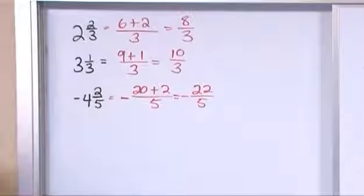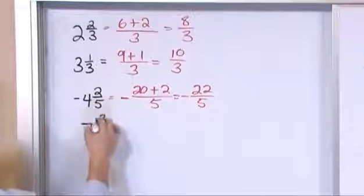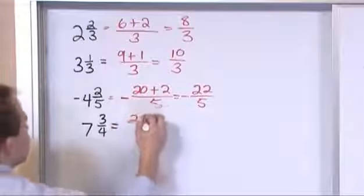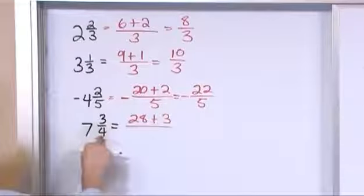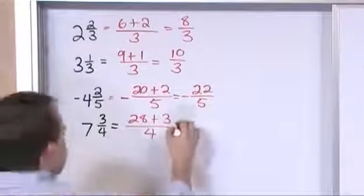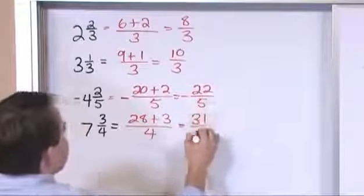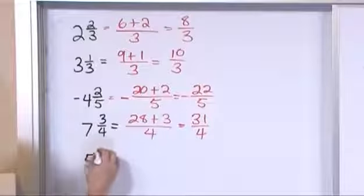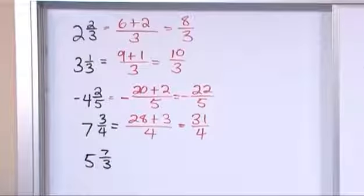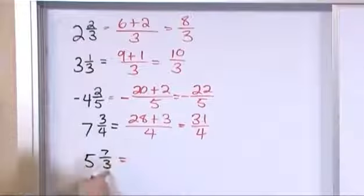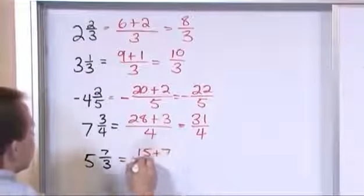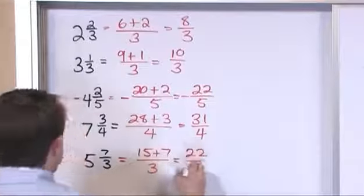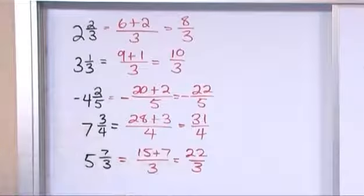When you have a negative, just let it hang out there by itself. Let's say you have seven and three fourths. Start at the bottom: seven times four is 28, plus the top which is three, divided by four. 28 plus three is 31 over four — that's the improper fraction equivalent. What if you have five and seven thirds? Same exact process: five times three is fifteen, plus seven, divided by three. Fifteen plus seven is twenty-two over three.